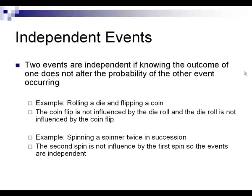Independent events are events that do not alter the outcome of each other. For example, rolling a die and flipping a coin — the coin doesn't care what the die rolls, and the die doesn't care what the coin flips. Another example: spinning a spinner twice in succession. The spinner doesn't remember or care what it spun the last time. They're completely independent events because the spinner is not influenced by its previous spin.